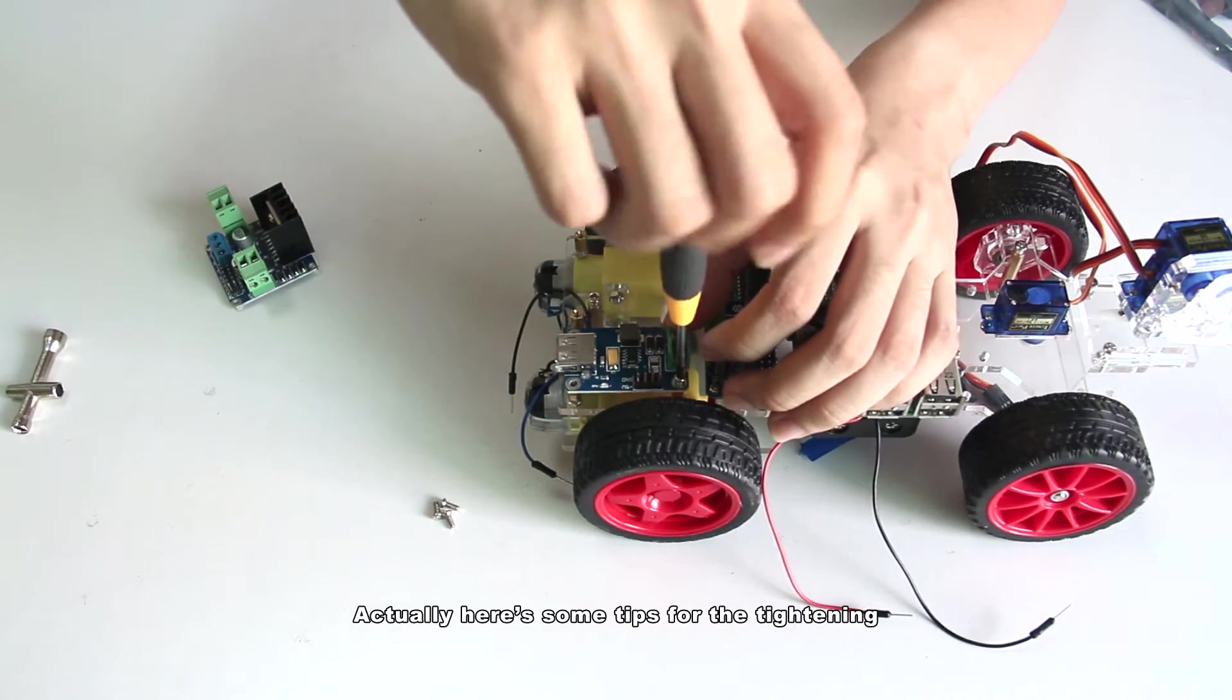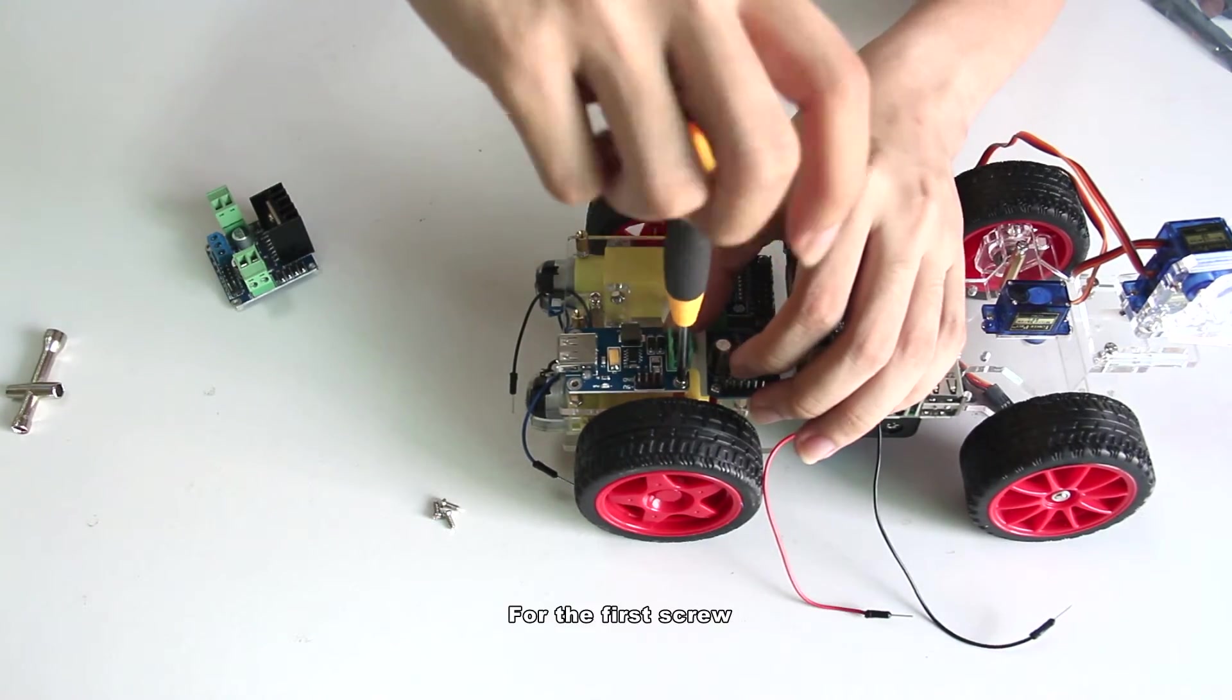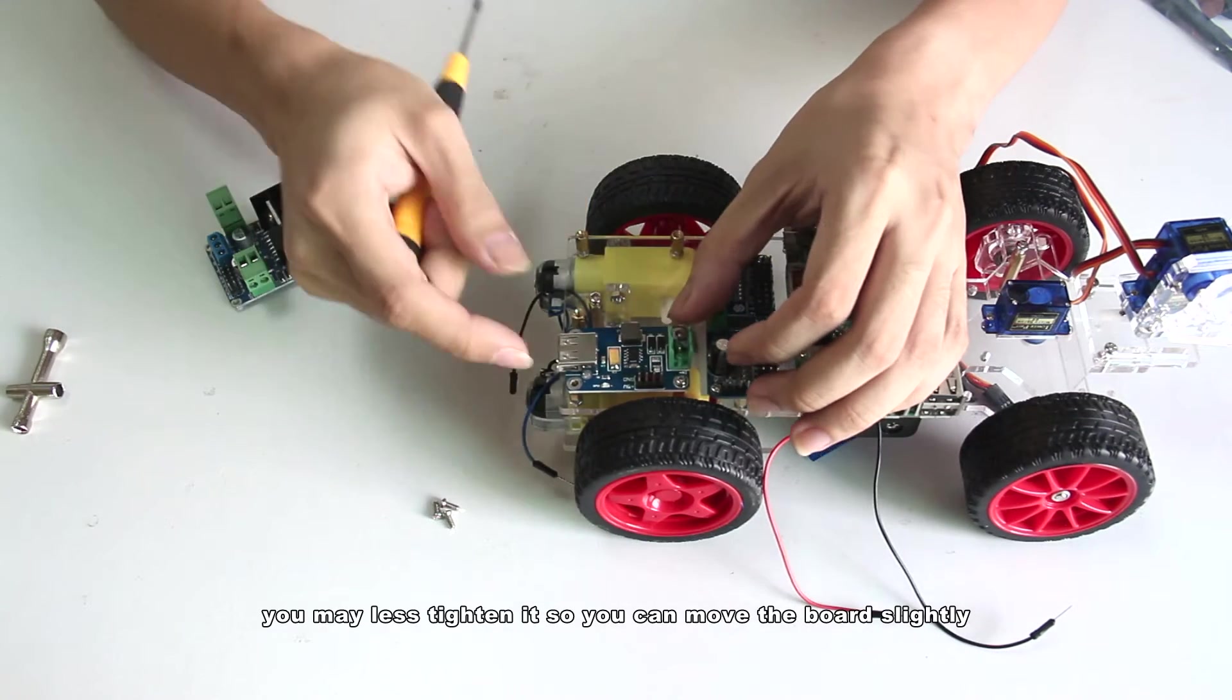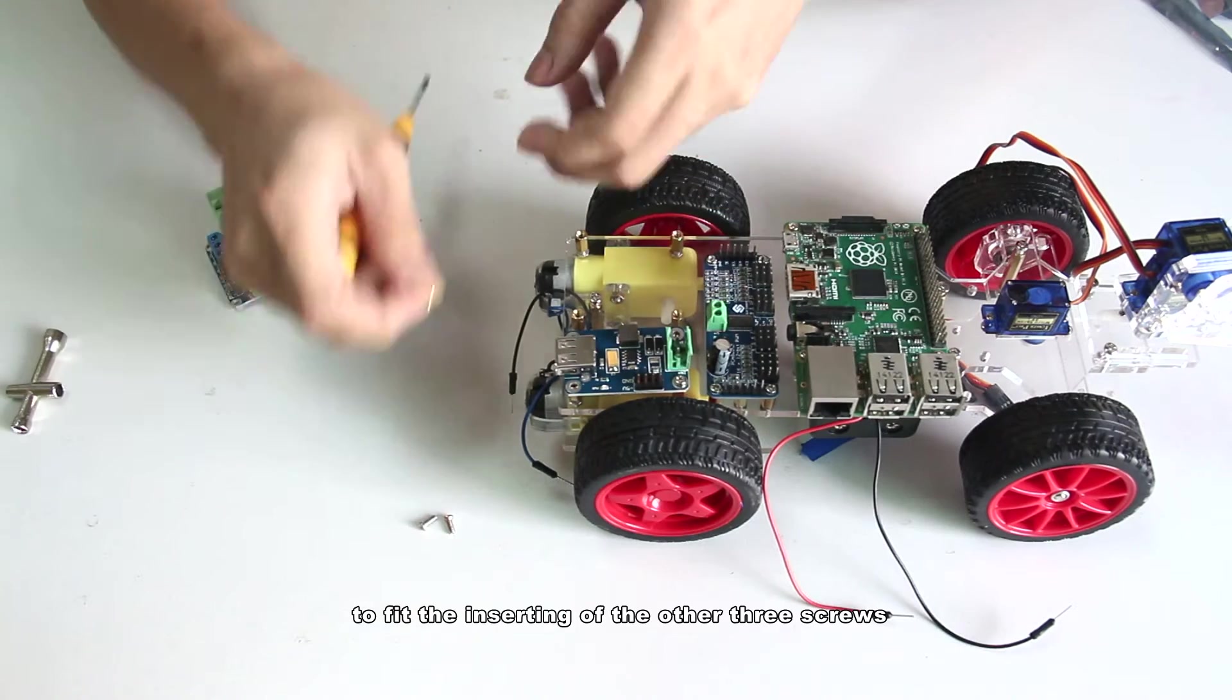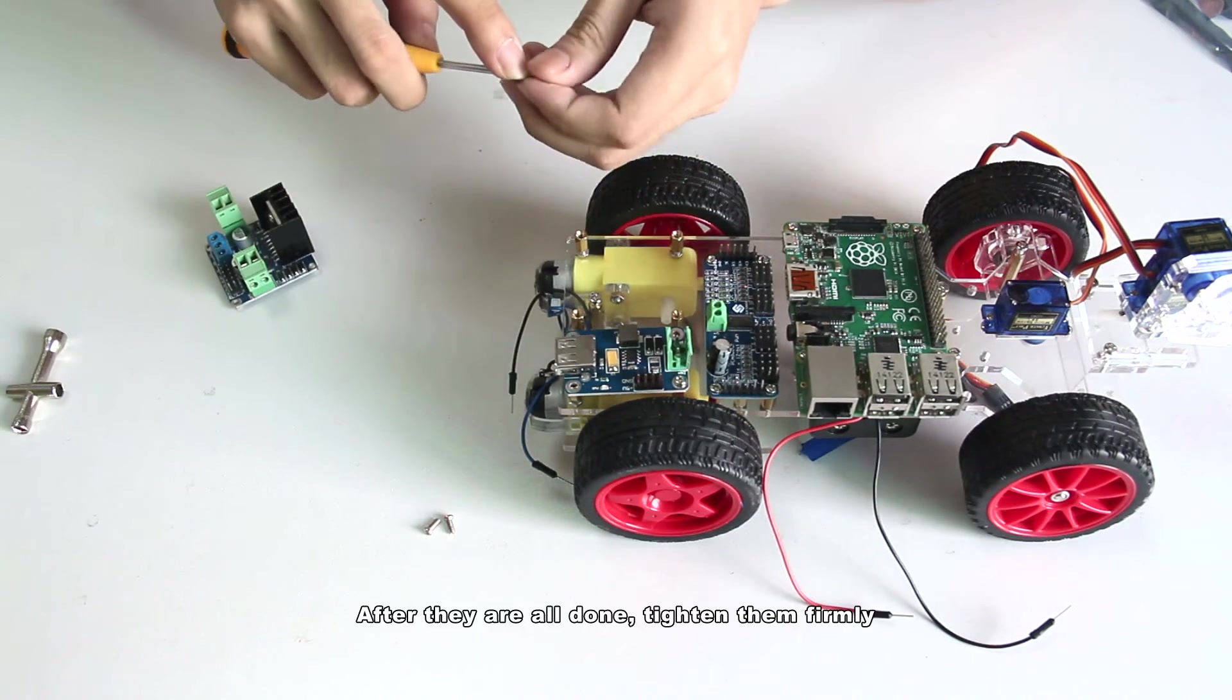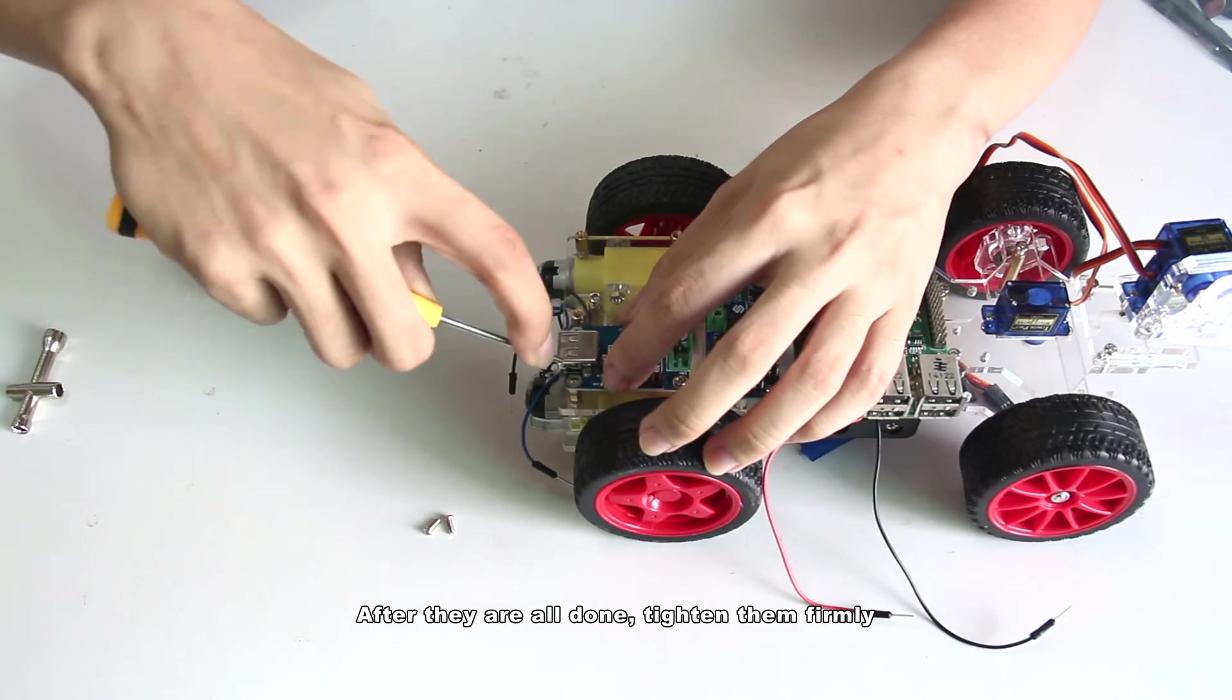Actually, here's some tips for the tightening. For the first screw, you may less tighten it so you can move the board slightly to fit the inserting of the other three screws. After they are all done, tighten them firmly.